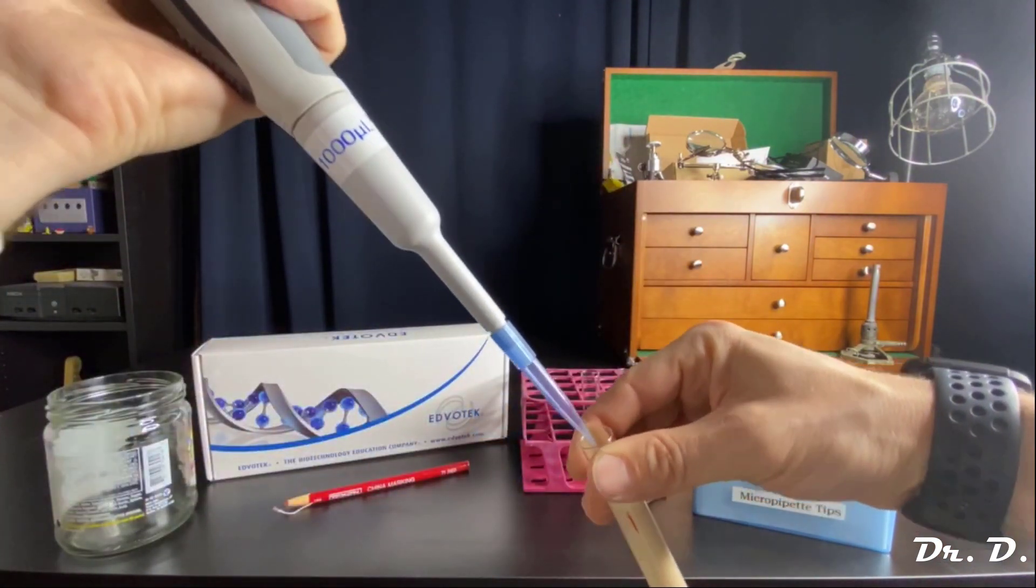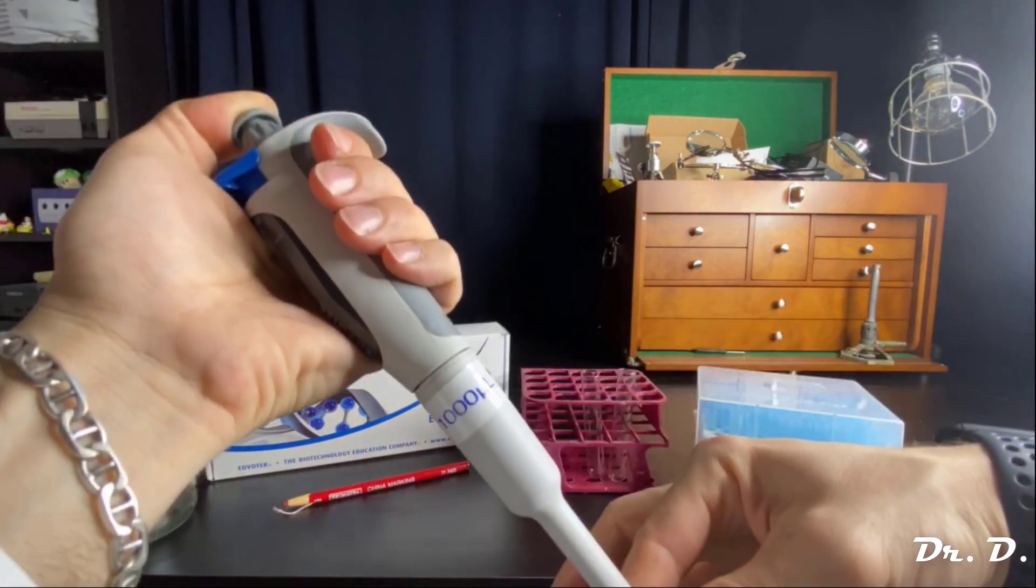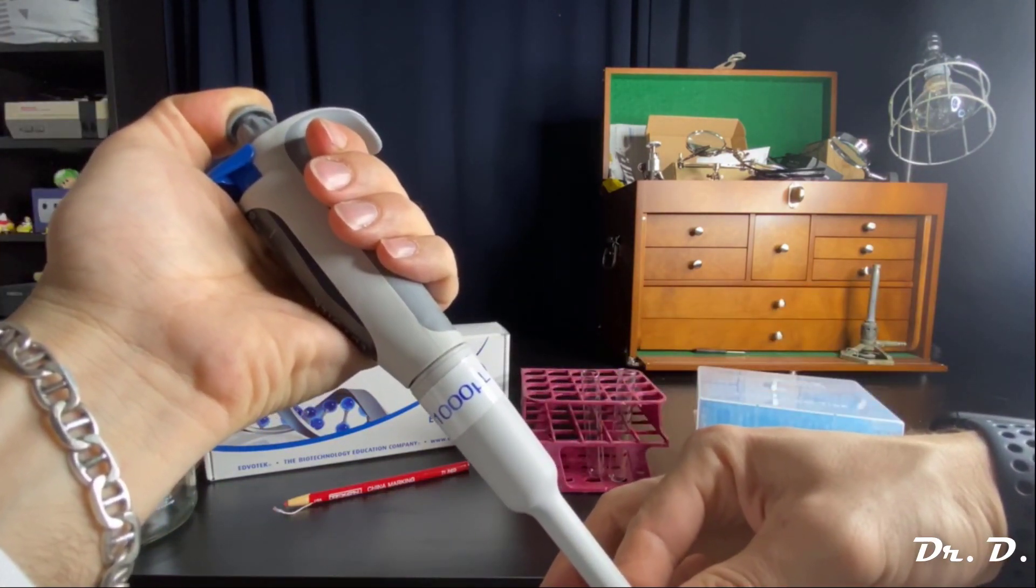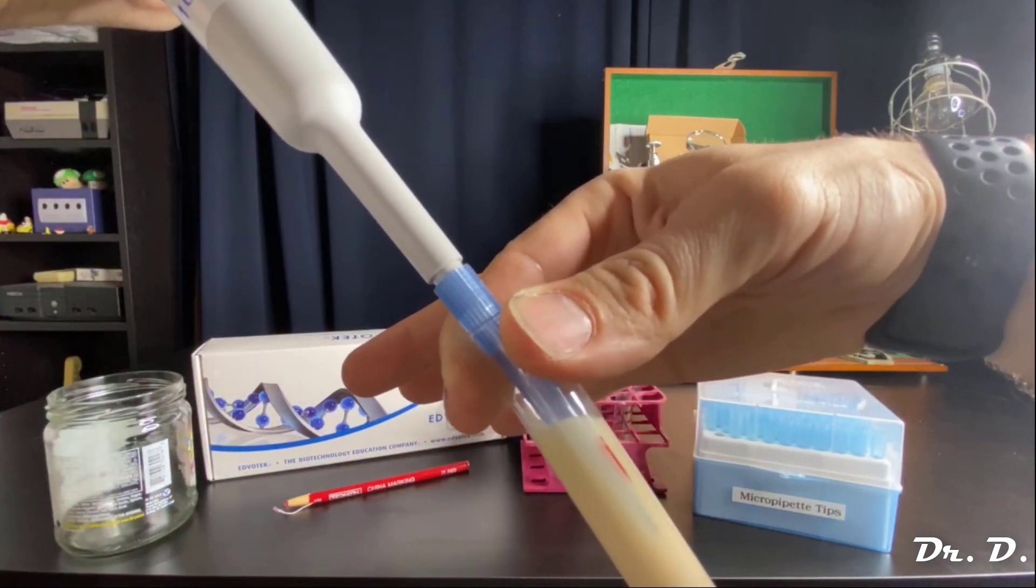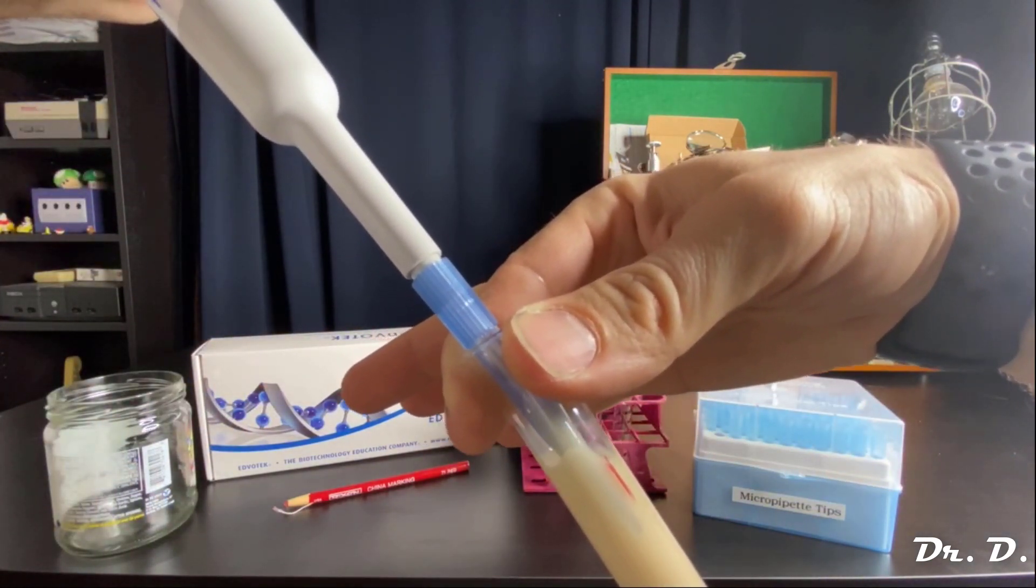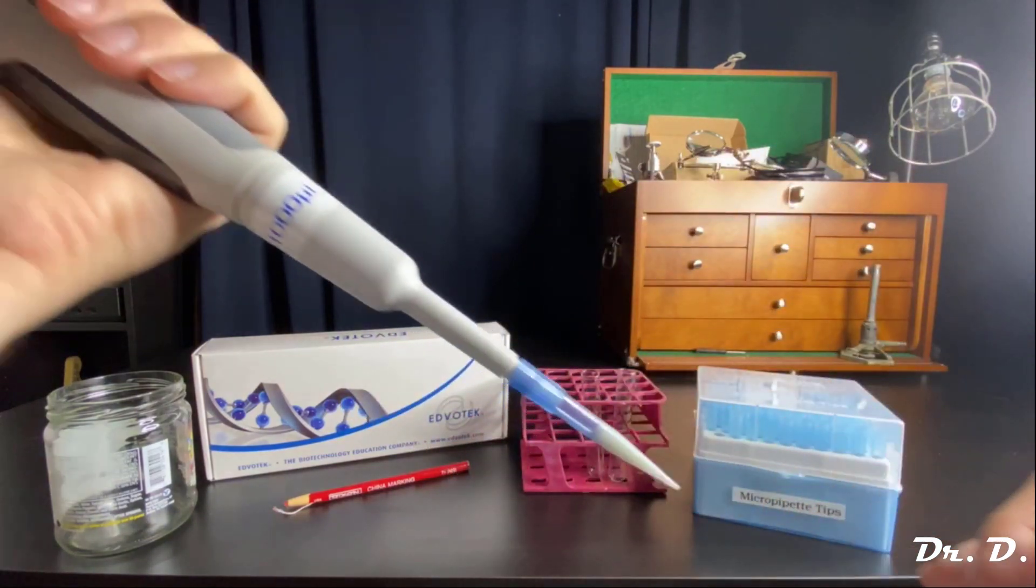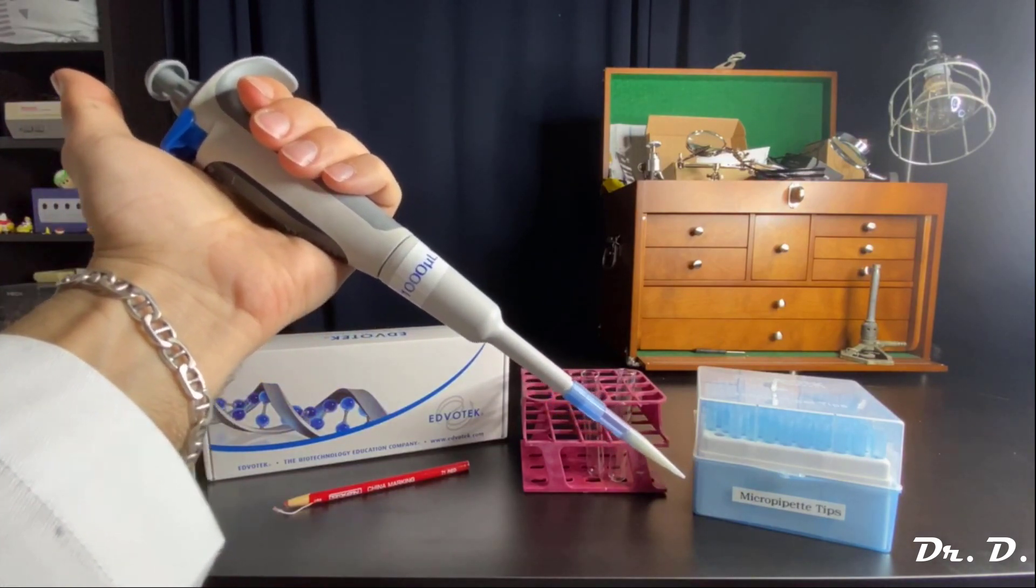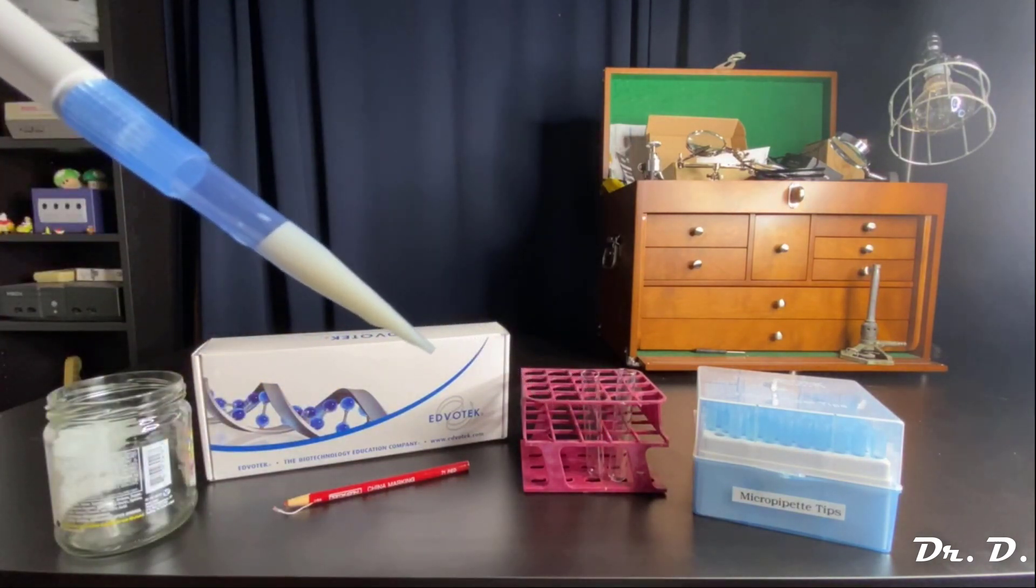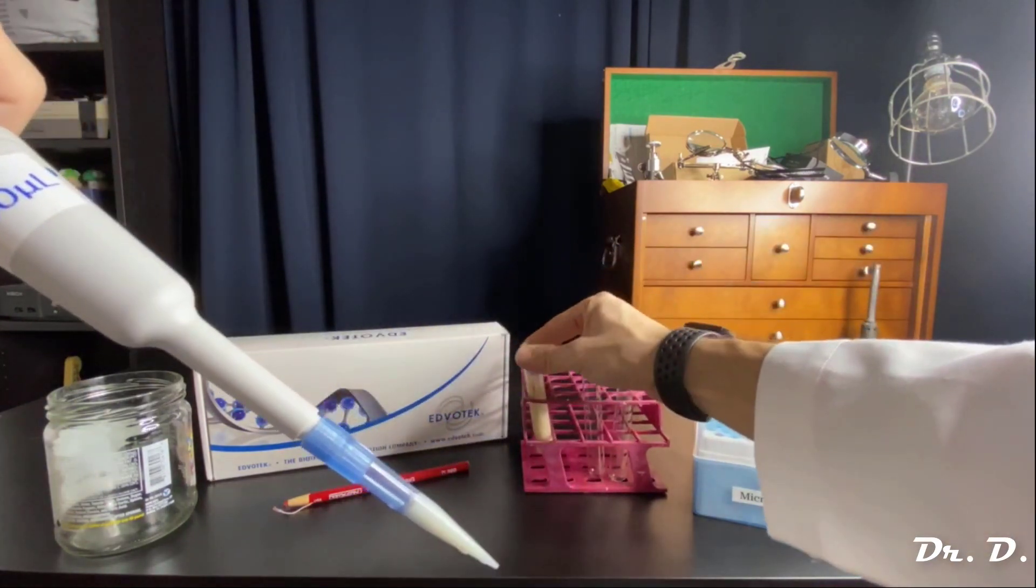I then make sure to submerge my tip into the solution. And then what do I do? Gently let go of the plunger. Gently let up. And what do I see? I slowly let up. And there you go. That's 500 microliters of solution in my tip. And you can clearly see that the solution is in the tip. So let me put test tube one down.